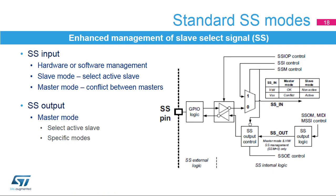The slave select signal is commonly used by the master node to select the slave node for communication. The signal implementation is mandatory in multi-master and multi-slave topologies. Though it is not mandatory in a single master-slave pair, it could be helpful for data flow synchronization regardless of the topology case. The slave select signal can operate as an input or as an output depending on the SSIOP control bit. The SS input can be managed by hardware or software depending on the SSM and SSI control bits in either master or slave modes.